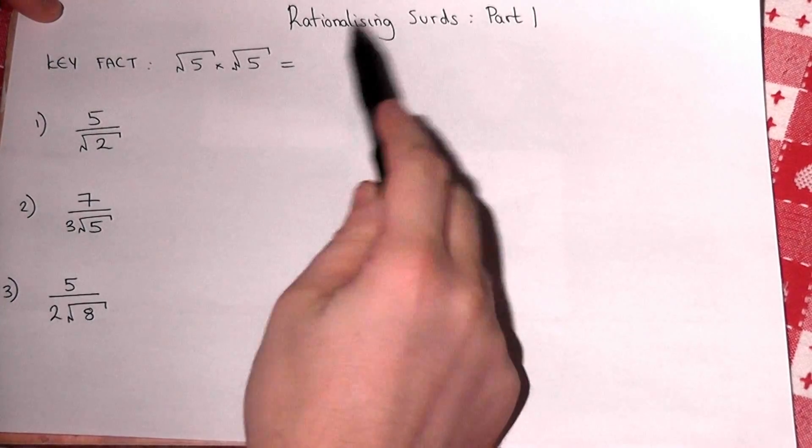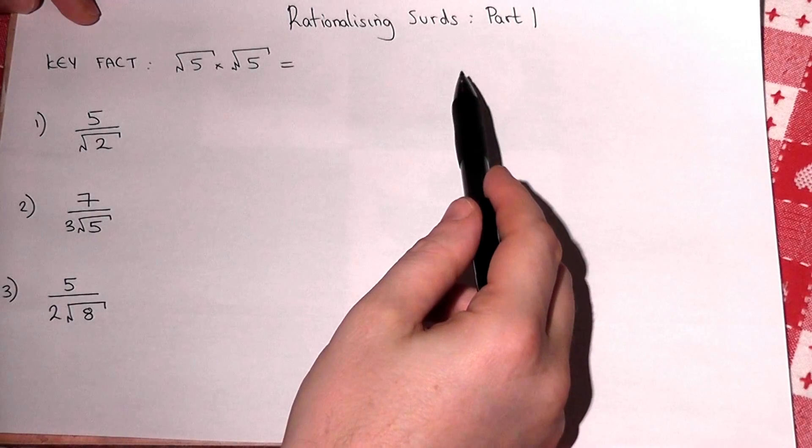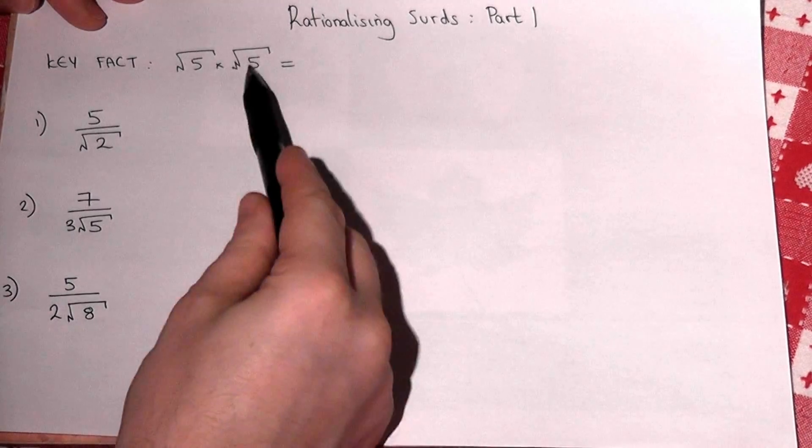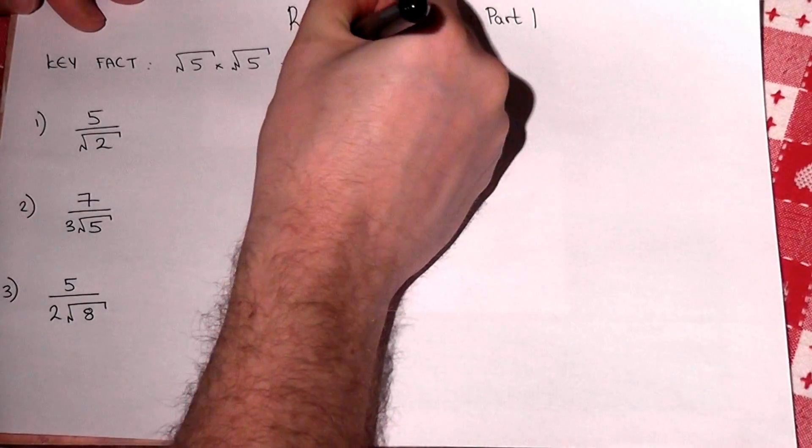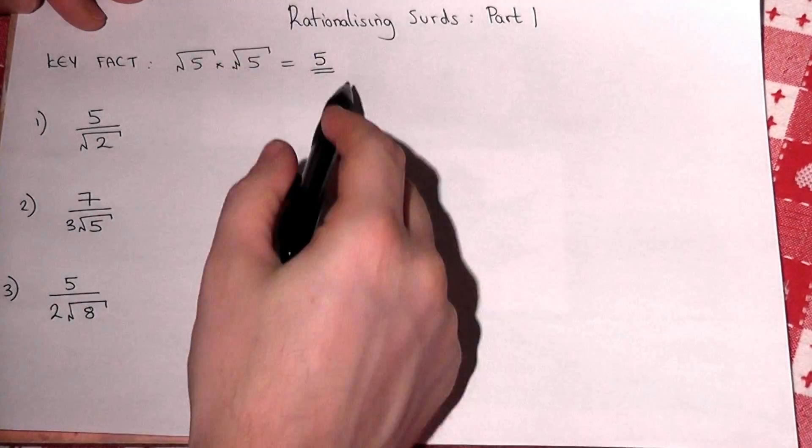This video looks at rationalizing surds, a key part of surd work. It uses one key fact, which is that if we do √5 × √5, for example, the answer is just 5. The square roots effectively cancel out.